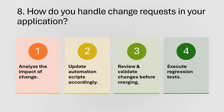The next question: how do you handle change requests in your application? For these kinds of questions, don't rush — take a moment and think about the best answer you can deliver. Here is a structured answer: first, analyze the impact of changes. Then update automation scripts accordingly. Next, review and validate changes before merging. Finally, execute regression tests. Explain these four points in a brief but thorough manner.